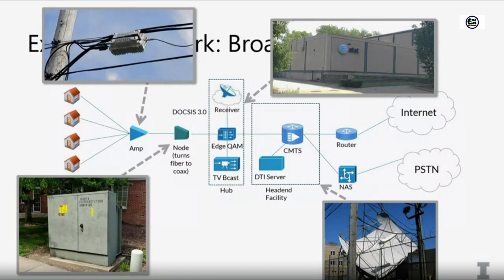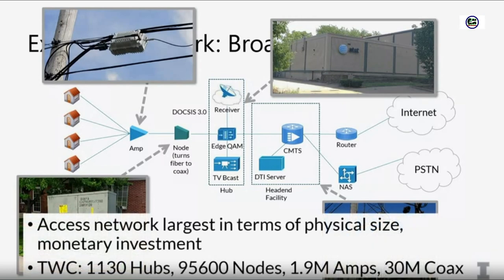In the access network, the stuff near the edge is also the largest in terms of physical size. For example, Time Warner Cable — one recent estimate is that they have only about a thousand hubs, but 95,000 nodes and 1.9 million amplifiers to provide service for 30 million coax users. You can see this network mushrooms out exponentially as you get closer to the edge, and the challenges of maintaining these networks increase as well.